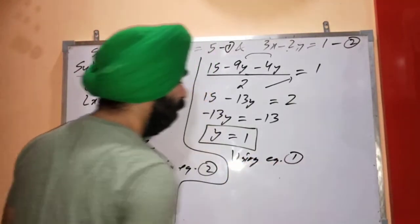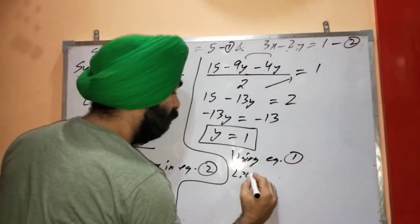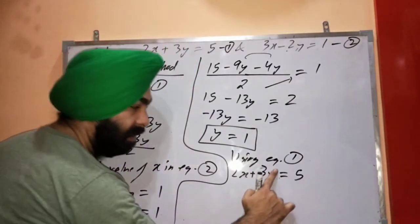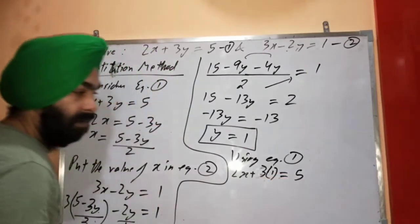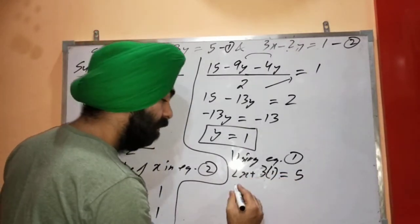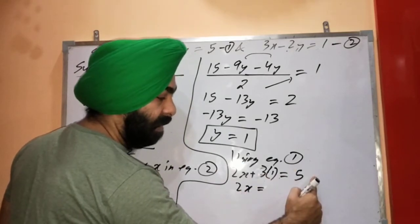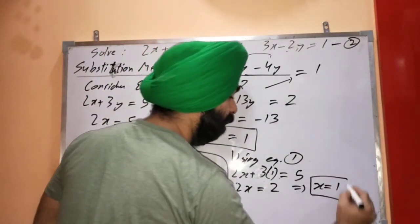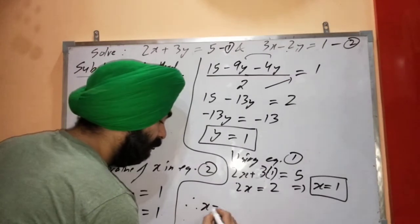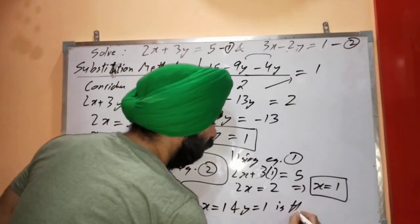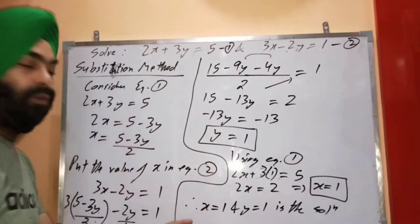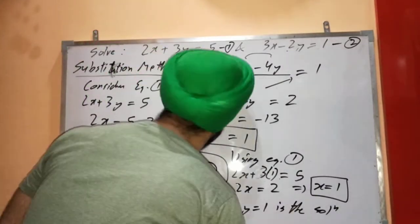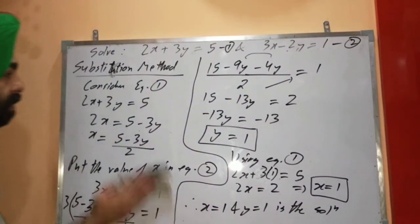Now we have the value y = 1. We can substitute this into any equation. I will use equation 1: 2x + 3y = 5. Substituting y = 1: 2x + 3 = 5, so 2x = 2, giving x = 1. Therefore x = 1 and y = 1 is the solution. This matches our graphical method result, confirming the answer is correct. I hope substitution method is clear to you all.